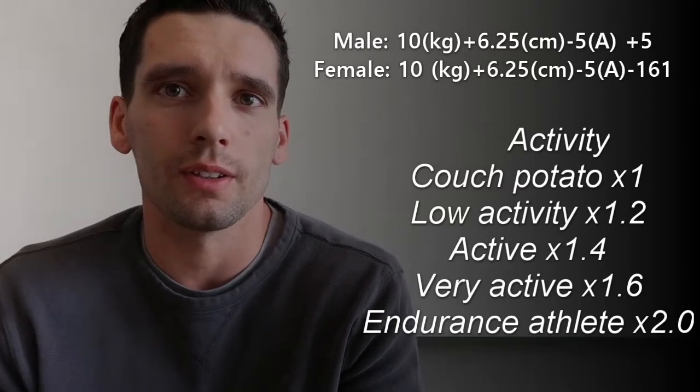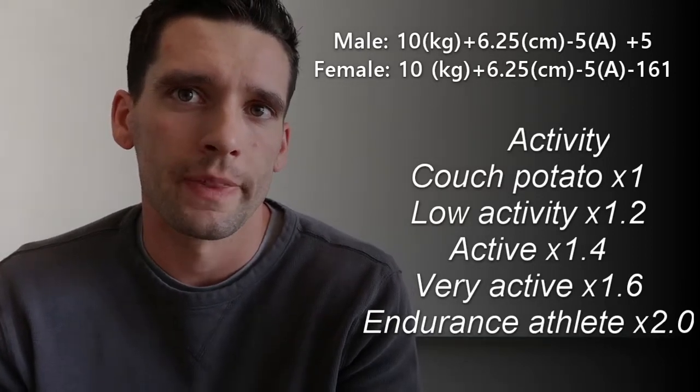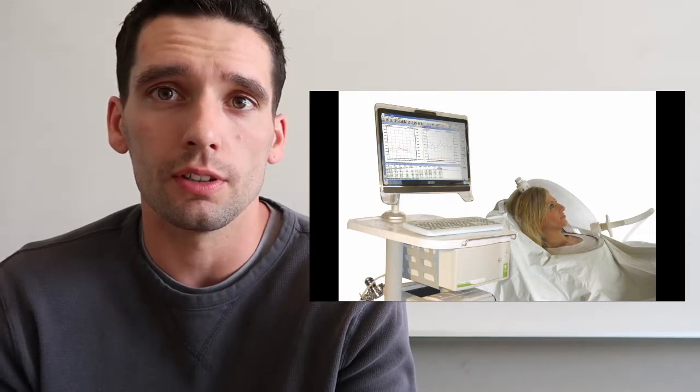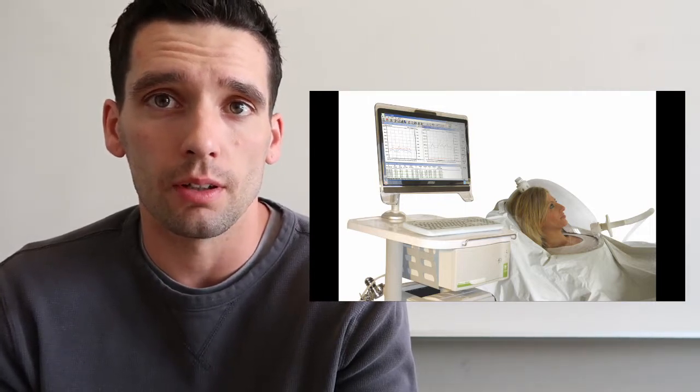The closest way to know how many calories you're actually using is a method called indirect calorimetry. You lay down or sit in a chair and they hook you up to a mask that measures how much oxygen you're utilizing at rest. That gives you a pretty accurate number for your resting calorie burn, but you still have to account for your activity.